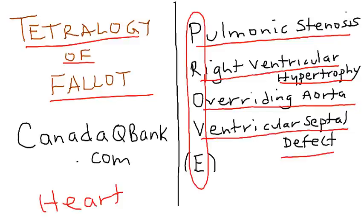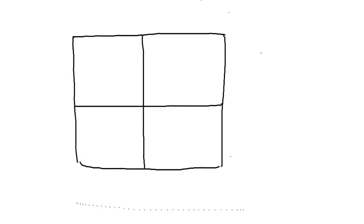This may seem a bit overwhelming, but I'm going to draw a diagram and hopefully explain this as clearly as possible. So we've got our heart here with the four chambers. Let's label this as the left ventricle, the right ventricle, the right atrium, and the left atrium.